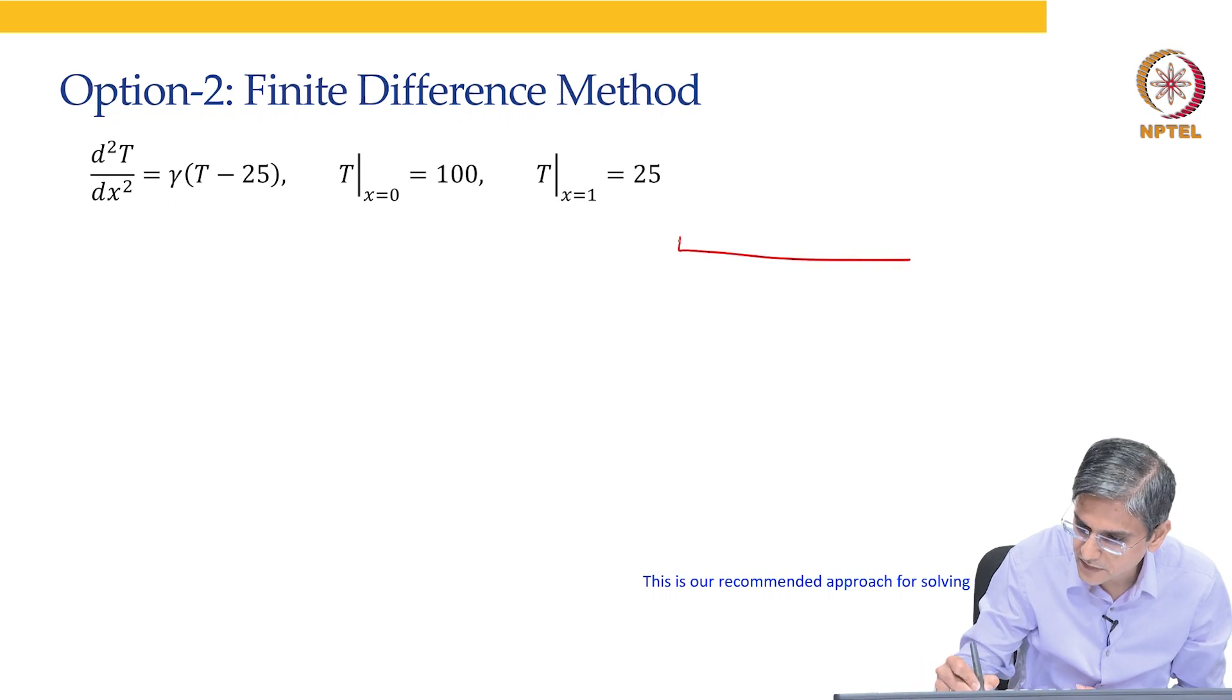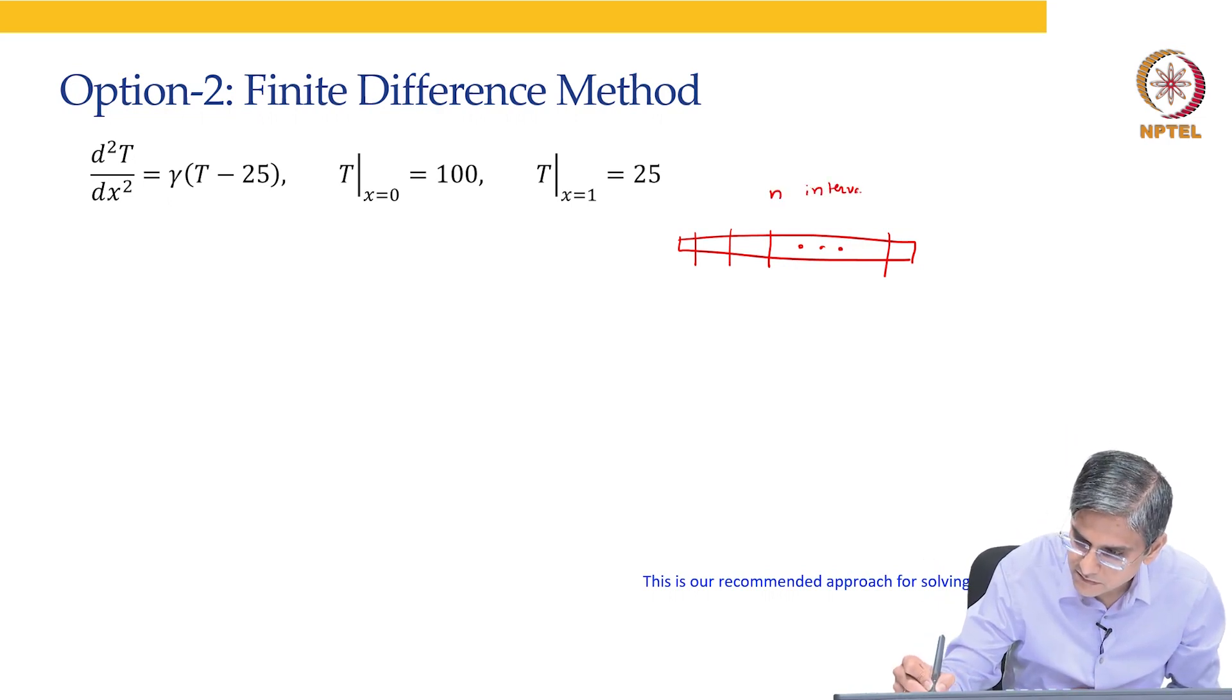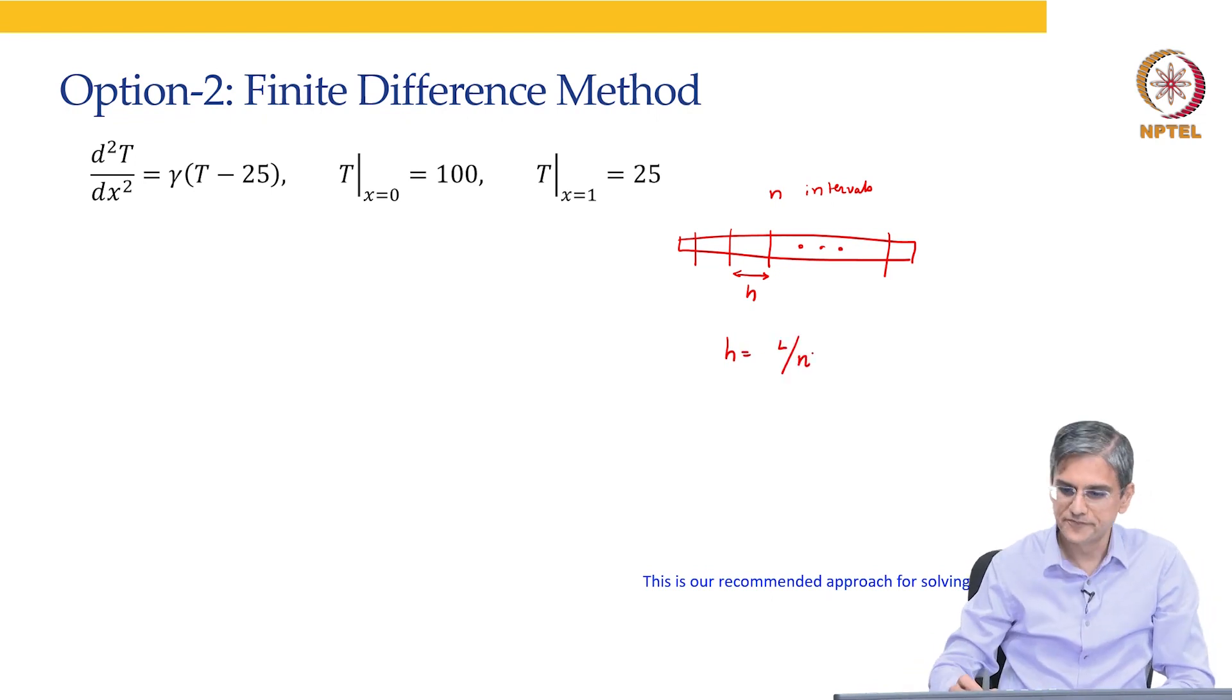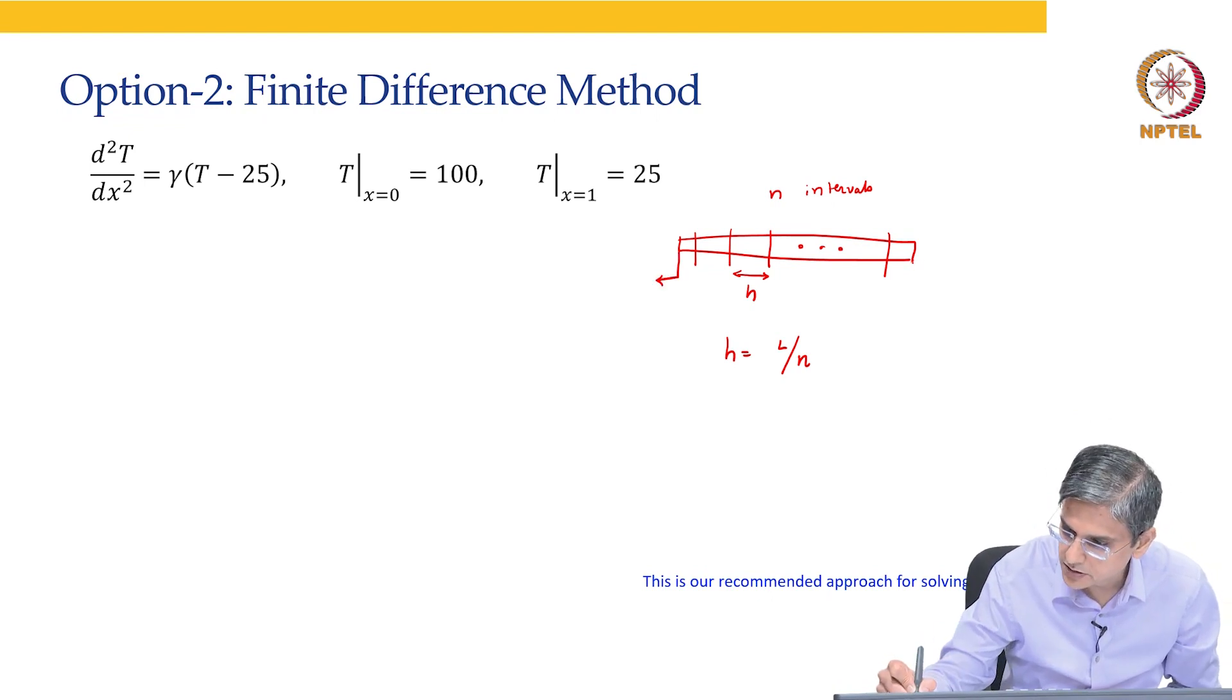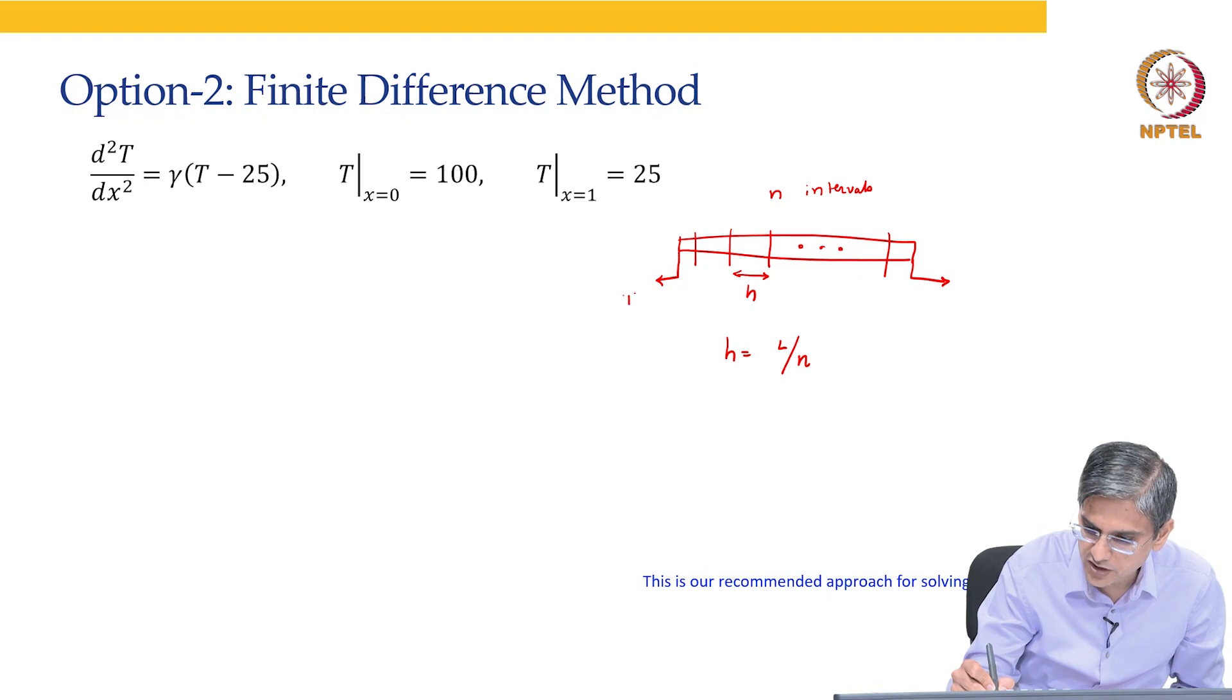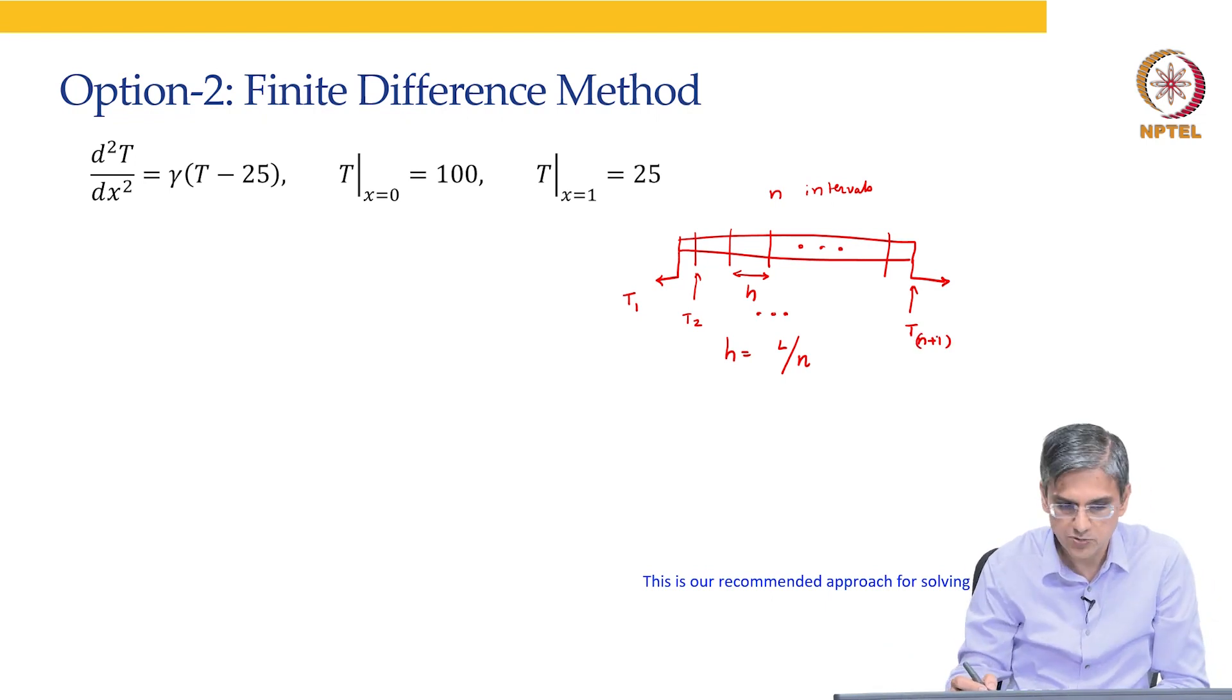So, let us look at this and how do we get this? So, we will take this entire rod and split it into n intervals, L by n.